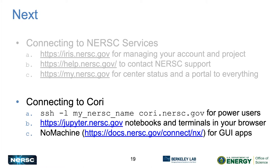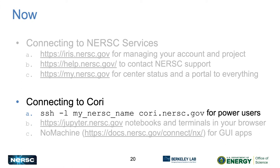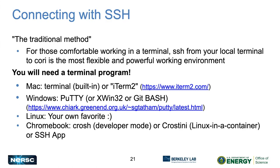Now we'll talk about ways to connect to Cori itself. There are three options: SSH from a terminal for power users, a browser-based terminal through JupyterHub, and NoMachine (also known as NX) for GUI applications like MATLAB or a debugger. SSH — ssh -l [username] cori.nersc.gov — is the traditional method. If you're comfortable in a terminal, it's far and away the most flexible and powerful working environment.